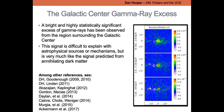Turning to the specific signal I want to discuss today: the Fermi telescope has clearly detected a highly statistically significant excess of gamma rays from the direction of the inner galaxy. This signal is objectively difficult to explain with known astrophysical sources or mechanisms, but its characteristics map on very nicely to what you'd expect from annihilating dark matter particles. There is a long history of work in this direction, with many papers contributing to the story.